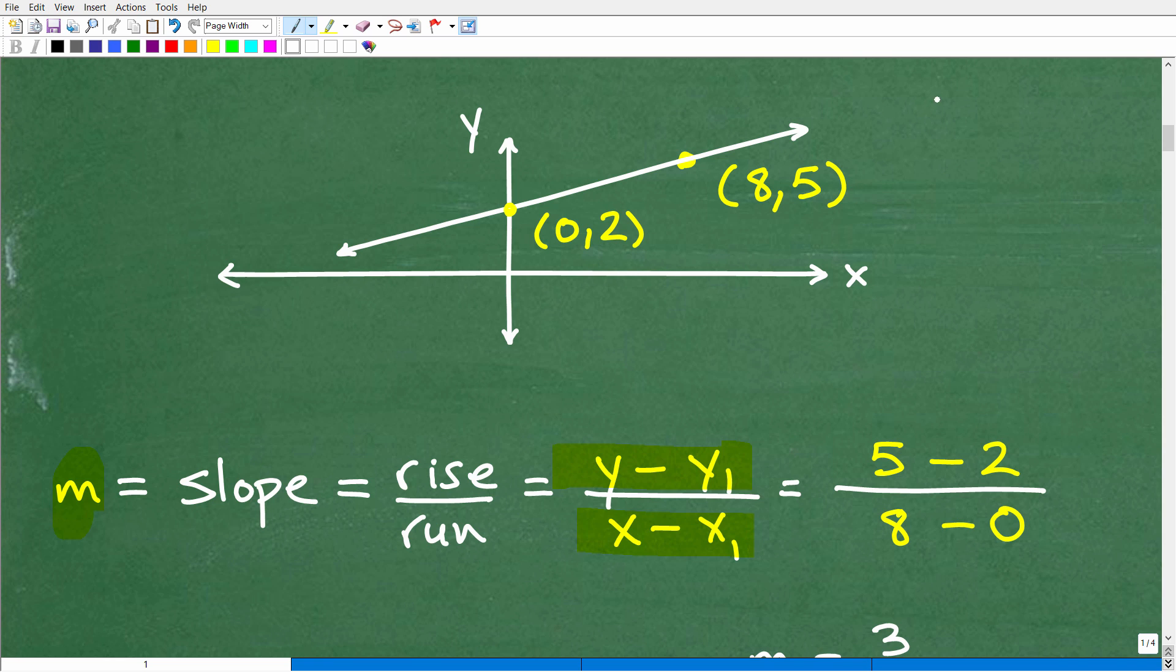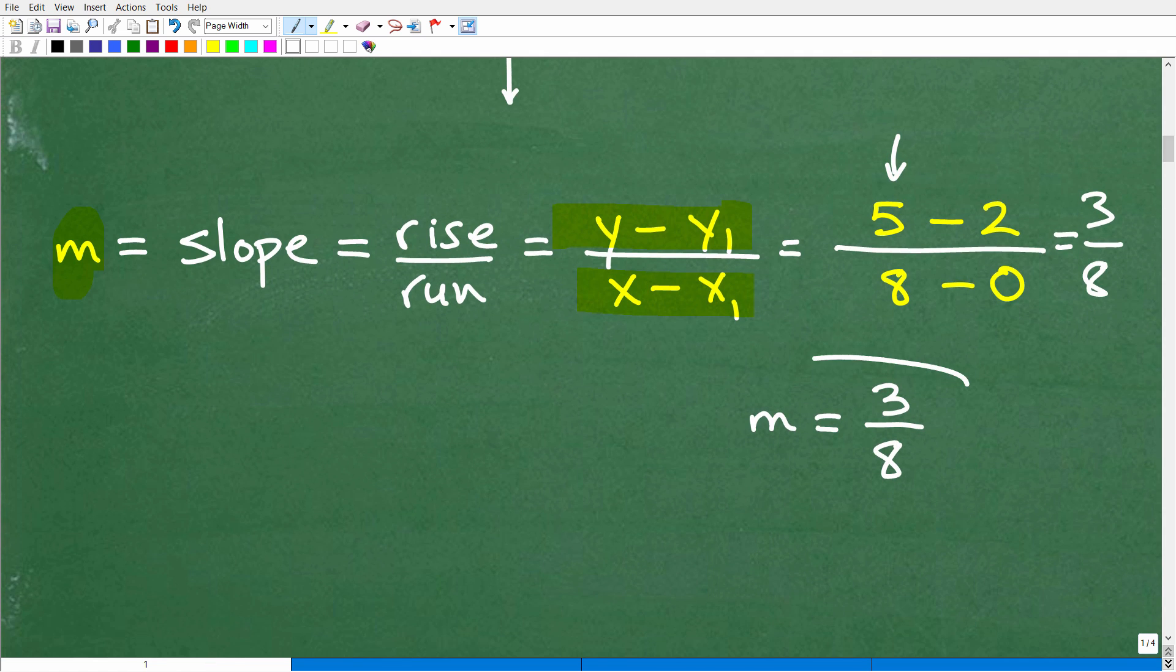And we're going to just basically subtract the Ys over the differences of the Xs. So let's get to it. So what is Y? Well, remember, in a point, the first value is X, the second value is Y. So here in this point (8, 5), 8 is X and 5 is Y. So we'll start with this Y and we're going to subtract it from this Y. So 5 minus 2. This is one way we can do it. We can also go 2 minus 5 as well. Now, let's go ahead and subtract the Xs, 8 and 0. This is the differences of the Xs. So 5 minus 2 is, of course, 3. 8 minus 0 is, of course, just 8. So the answer is 3/8. That is the slope.